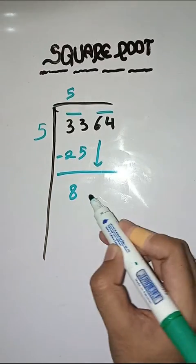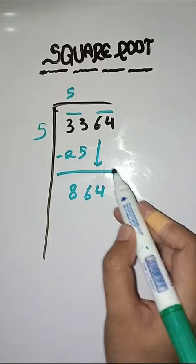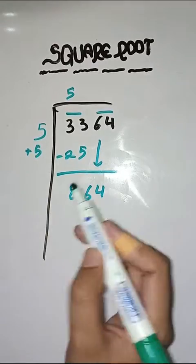Next pair is 64. इसका हम नीचे लेएंगे. यहां पर करेंगे हम twice. 5 plus 5, 10.